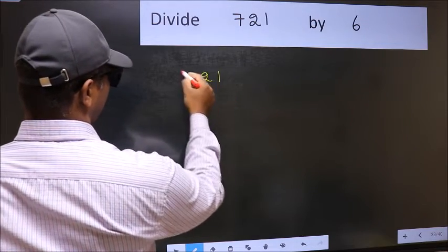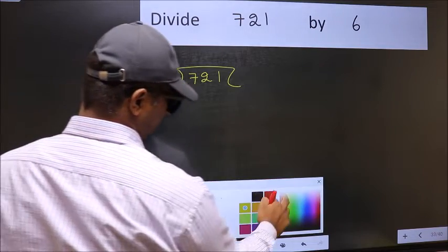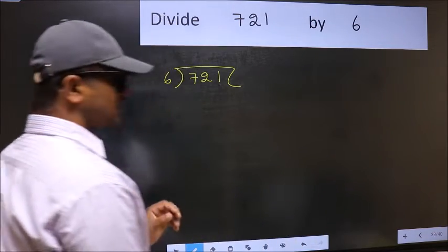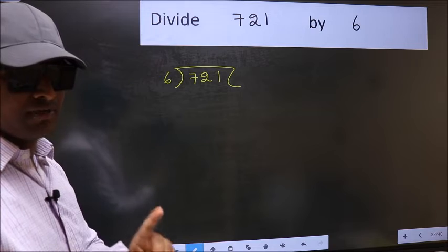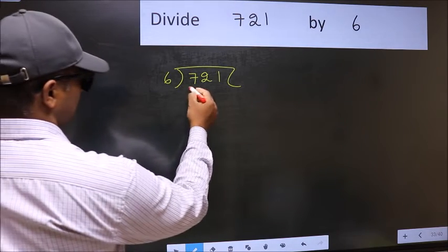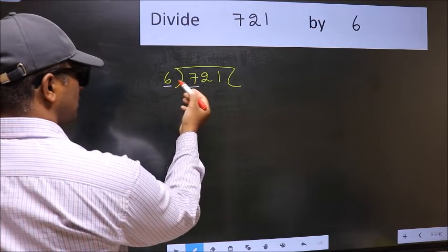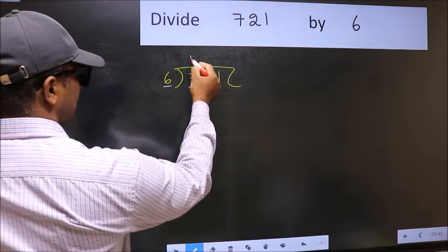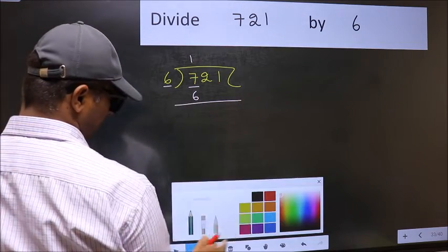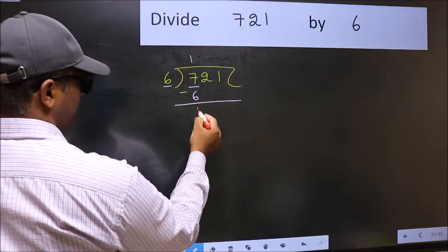721 and 6 here. This is your step 1. Next, here we have 7 and here 6. A number close to 7 in 6 table is 6 once 6. Now, you should subtract. 7 minus 6, 1.